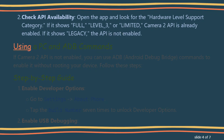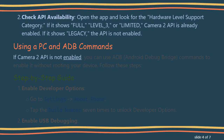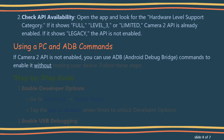Using a PC and ADB commands. If Camera 2 API is not enabled, you can use ADB — Android Debug Bridge — commands to enable it without rooting your device. Follow these steps.